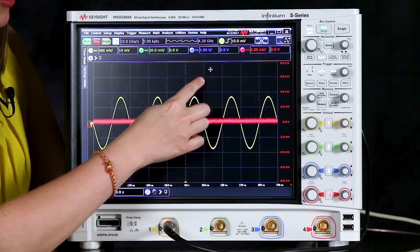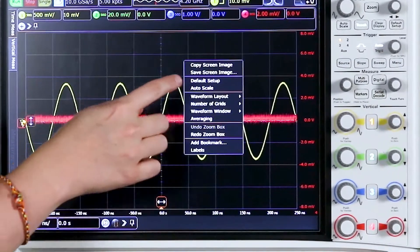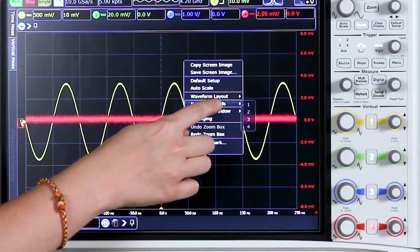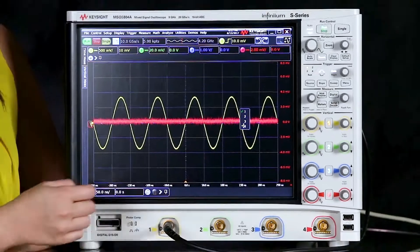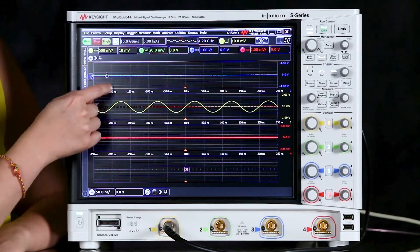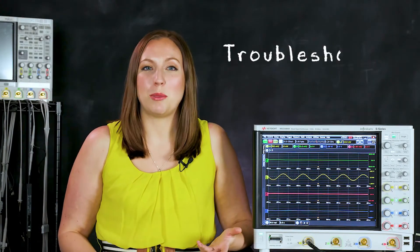We can also view these waveforms separately in their own grids. So we'll right click and then we'll choose number of grids and we'll select four and we can drag and drop each of the waveforms to its own separate grid. Now we're ready for viewing our waveforms and doing basic troubleshooting.